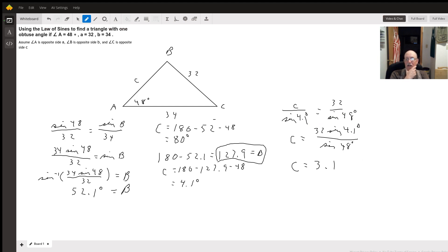We're going to multiply both sides by the sine of 4.1. And when you calculate that out on the right side, you get side C measures 3.1.